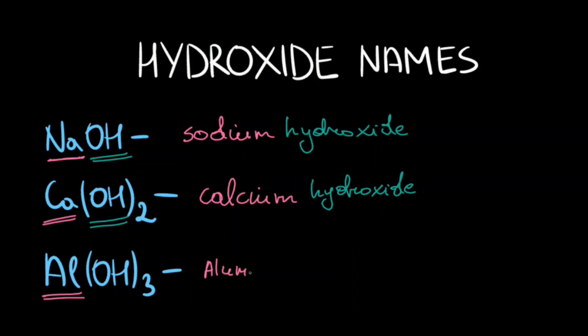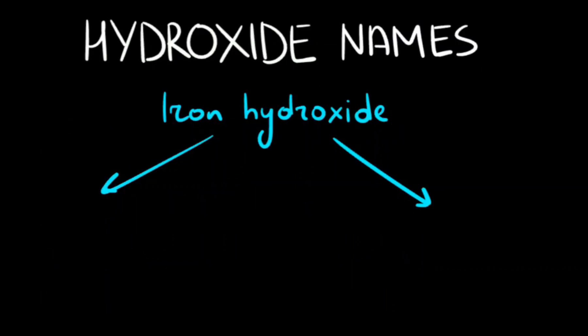However, sometimes we need to add roman numerals when we are naming the compounds, and we do that only when our metal can have multiple positive oxidation states.